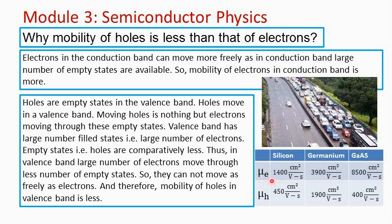In case of silicon, mobility of electrons is 1400 centimeter square per volt second and mobility of holes is 450 centimeter square per volt second.